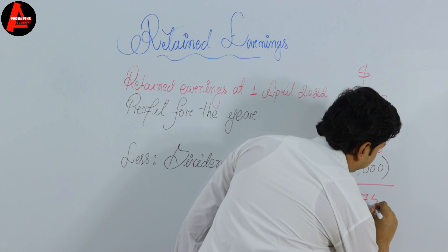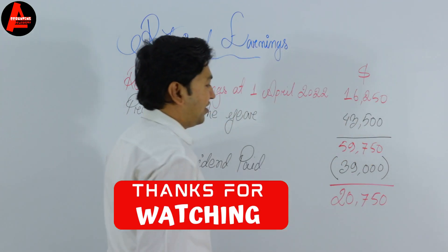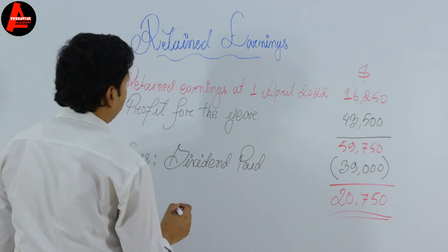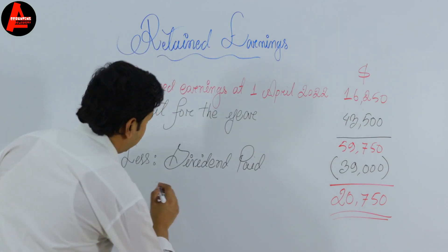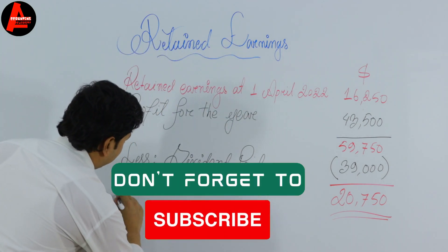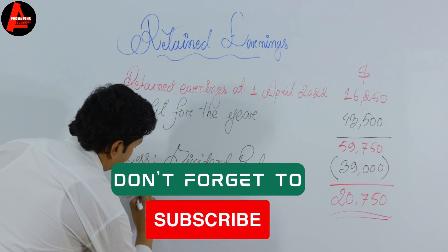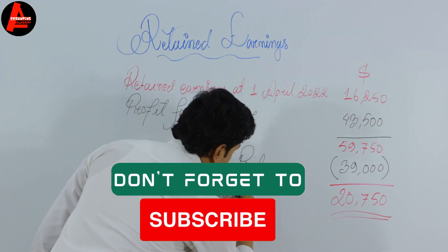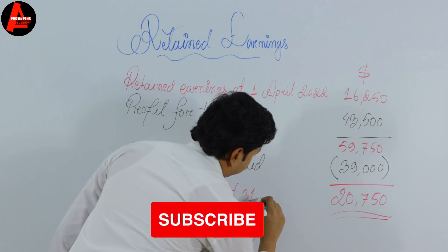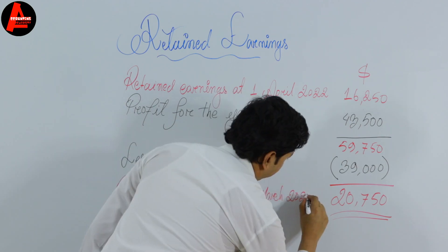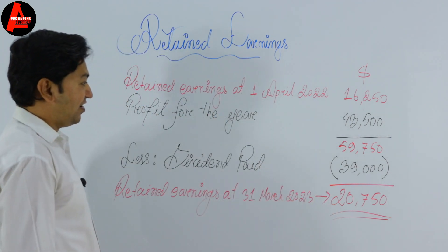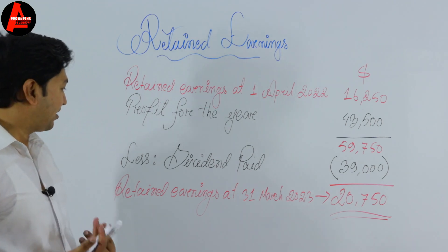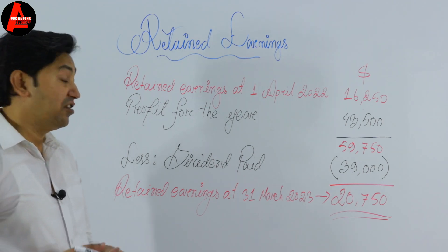So the closing amount is $20,750. This is the retained earnings closing balance at 31st March 2023. This is how you calculate the closing balance of retained earnings.